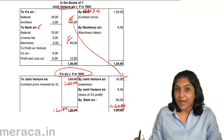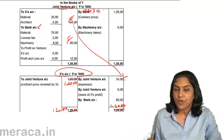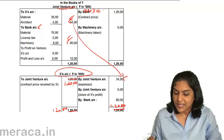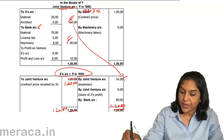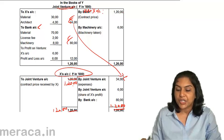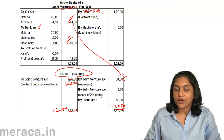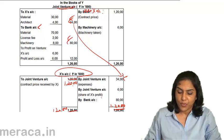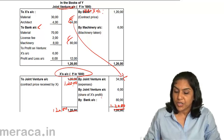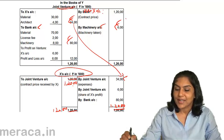Contract price received by X: X's Account debit to Joint Venture, 1 crore 20 lakhs. The machinery taken over — 6 lakhs taken over by Y — so the entry would be Machinery Account debit to Joint Venture, 6 lakhs.